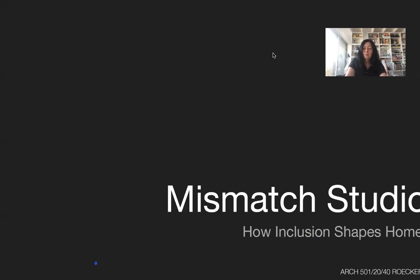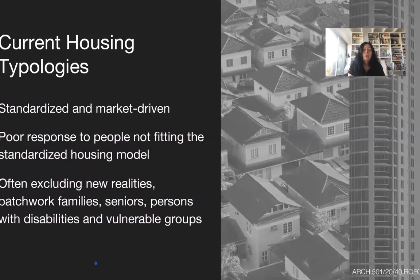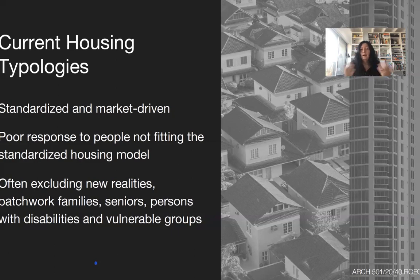So what is the Mismatch Studio about? The subtitle says we're looking at how inclusion shapes a home. When we look at our current housing typologies, they are extremely standardized and market-driven — often a poor response, not fitting everyone's needs. Especially when we think about how society has changed: we have patchwork families, we claim to be a multicultural society, but in our built environment that has hardly any impact. Then seniors — their needs are more on the radar as they become a bigger group — and persons with disabilities and other vulnerable groups face extreme difficulties.